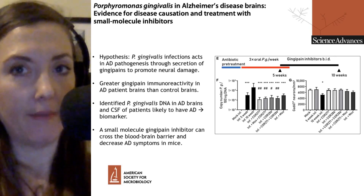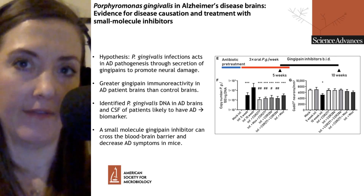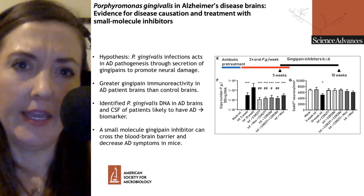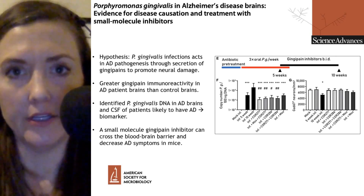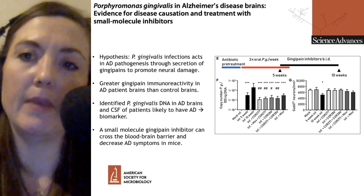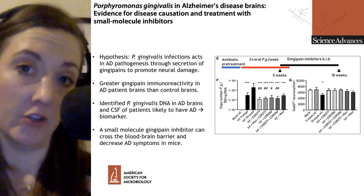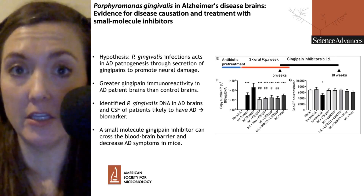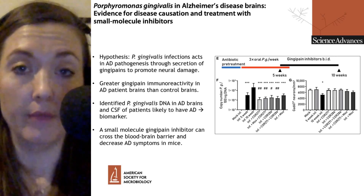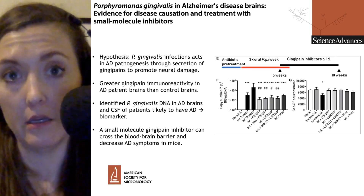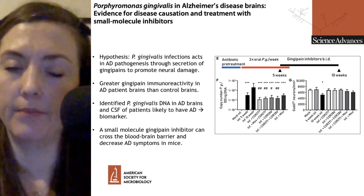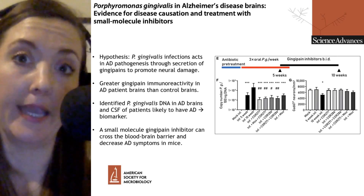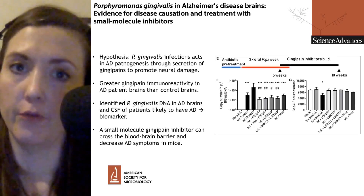They also looked at patients who had been diagnosed as possibly having Alzheimer's disease. Alzheimer's is a little bit hard to diagnose currently because it often involves brain architecture, which is really a postmortem diagnosis. But based on family history and behavior, there are patient cohorts likely to have Alzheimer's. They looked at the cerebrospinal fluid of these patients and also found P. gingivalis DNA, suggesting it might be a potential biomarker that differentiates Alzheimer's disease from other forms of dementia.